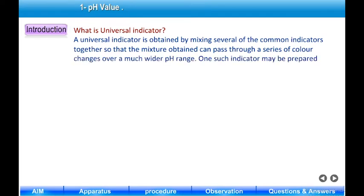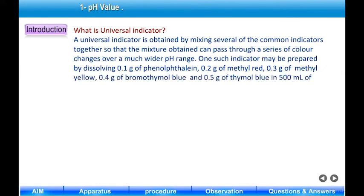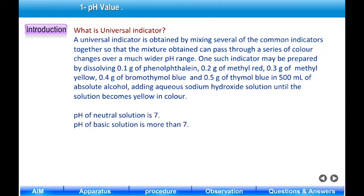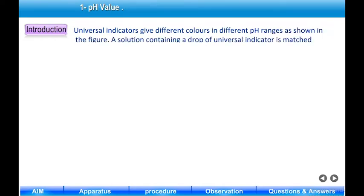One such universal indicator may be prepared by dissolving 0.1 g of phenolphthalein, 0.2 g of methyl red, 0.3 g of methyl yellow, 0.4 g of bromothymol blue, and 0.5 g of thymol blue in 500 ml of absolute alcohol, then adding aqueous sodium hydroxide solution until the solution becomes yellow. The pH of a neutral solution is 7, basic solution is more than 7, and acidic solution is less than 7. The universal indicator gives different colors in different pH ranges as shown in the figure.